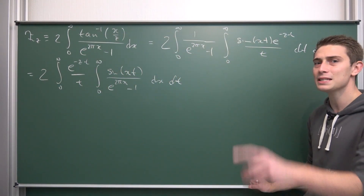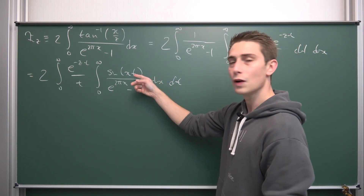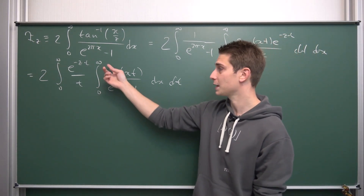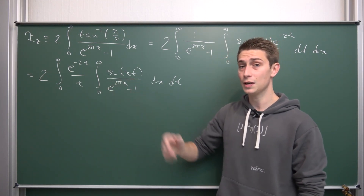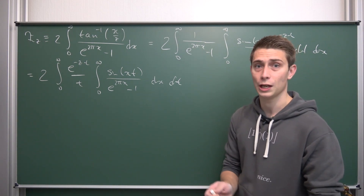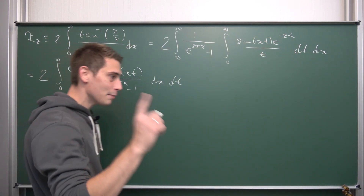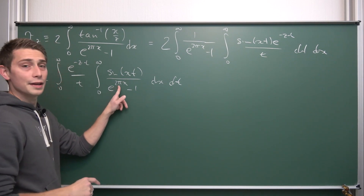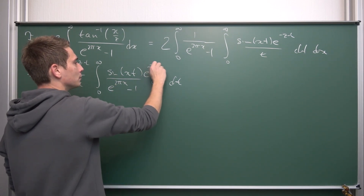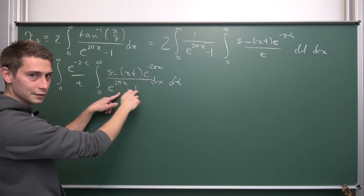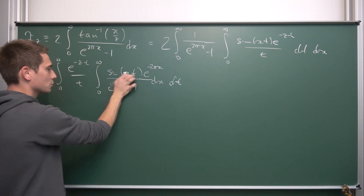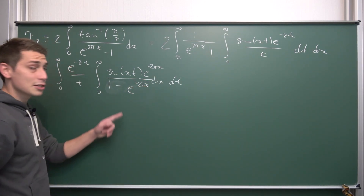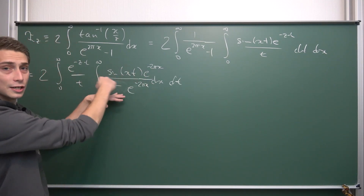It doesn't look good either, but it's getting better. The 1 over (e to the something minus 1) is nearly a geometric series, but at the moment it doesn't lie in the radius of convergence because as x goes to infinity, e goes to infinity overall. So we're going to use a trick: we expand the fraction by e^(−2πx) over e^(−2πx). If we expand the denominator, e^(something) times e^(−something) is just 1, and then minus 1 times that factor is just e^(−2πx). Now 1 over (1 minus e^(something)) is just the geometric series in e^(−something).